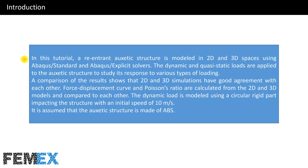A comparison of the results shows that 2D and 3D simulations have good agreement with each other. Force displacement curve and Poisson's ratio are calculated for the 2D and 3D models and compared to each other. The dynamic load is modeled using a circular rigid part impacting the structure with an initial speed of 10 meters per second.